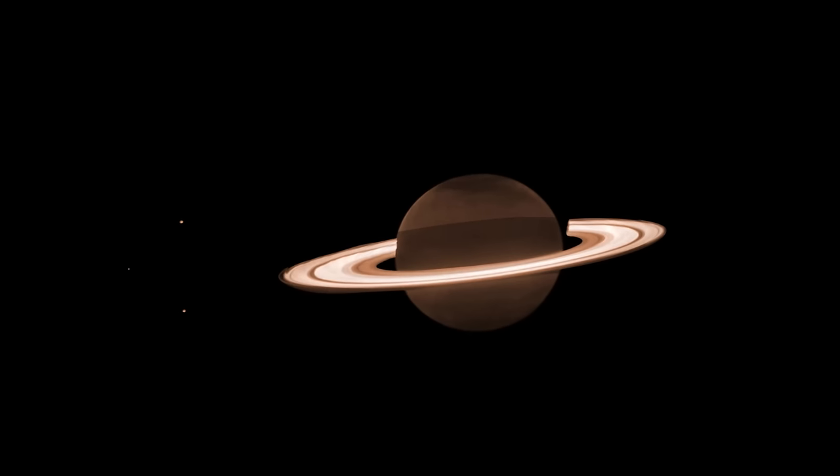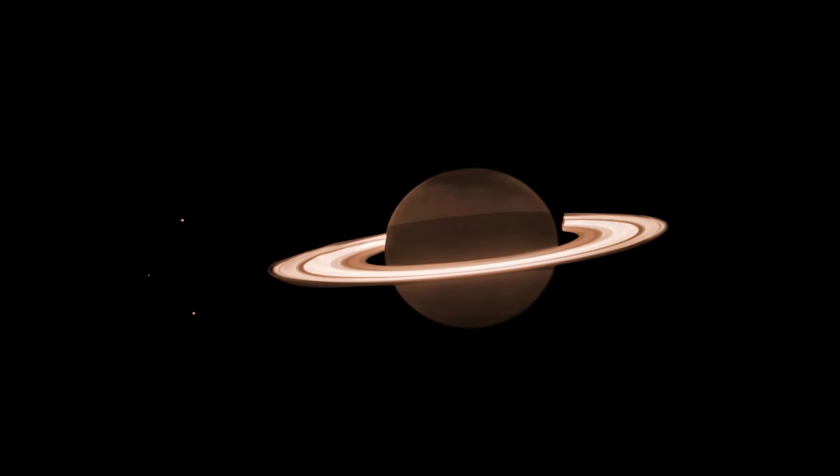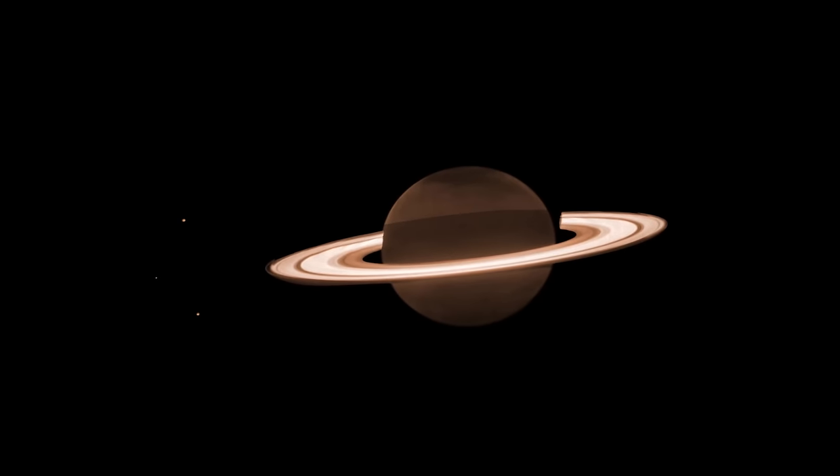The famed ringed planet, Saturn, appears quite dark to the telescope here, because methane in the planet absorbs infrared light strongly.